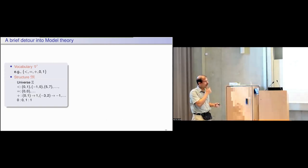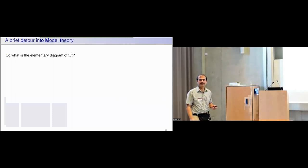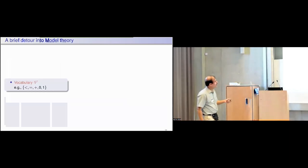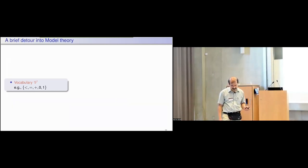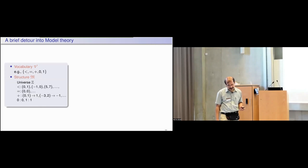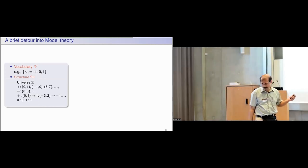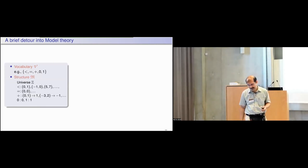There is a distinction because there are theories which are not decidable but whose elementary diagrams are decidable, or the other way around — theories which are decidable but whose elementary diagrams are not. This is a notion from model theory, and I will use one slide to explain what an elementary diagram is.